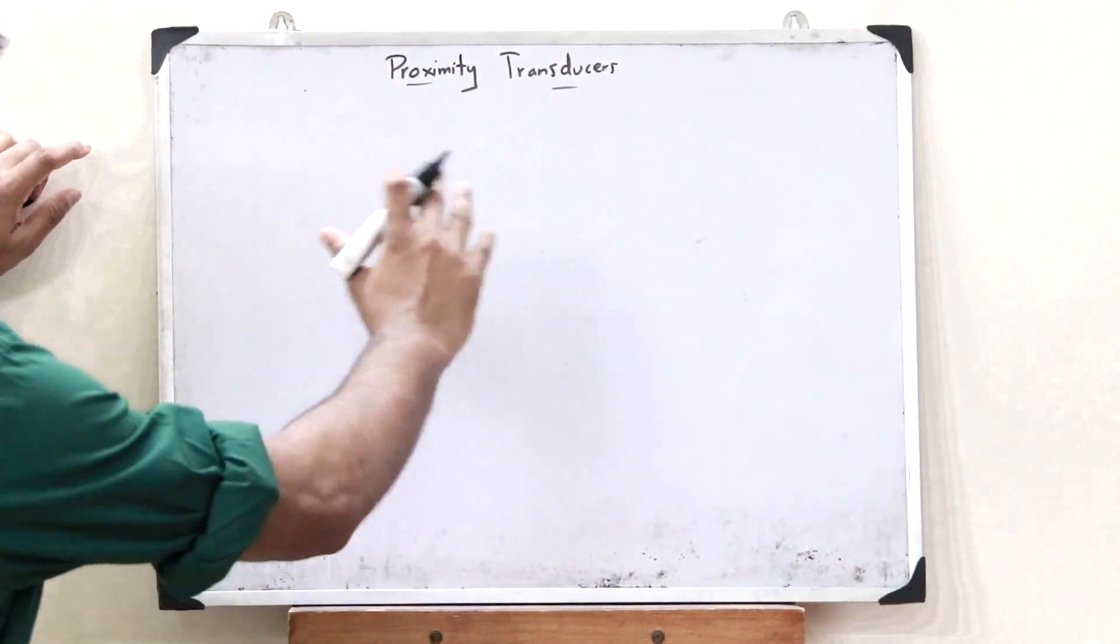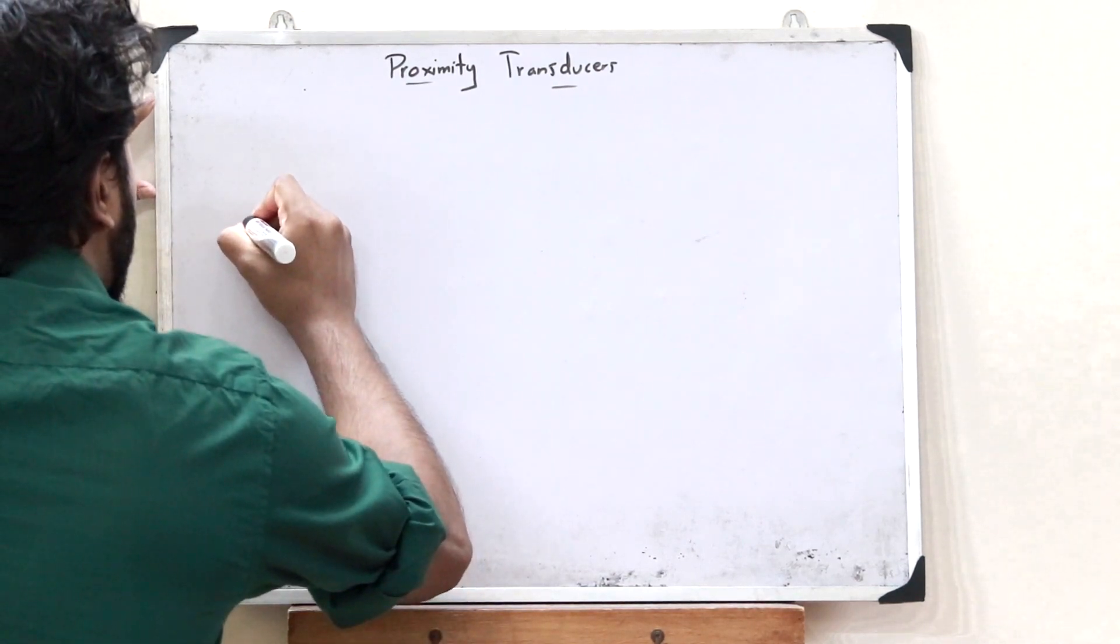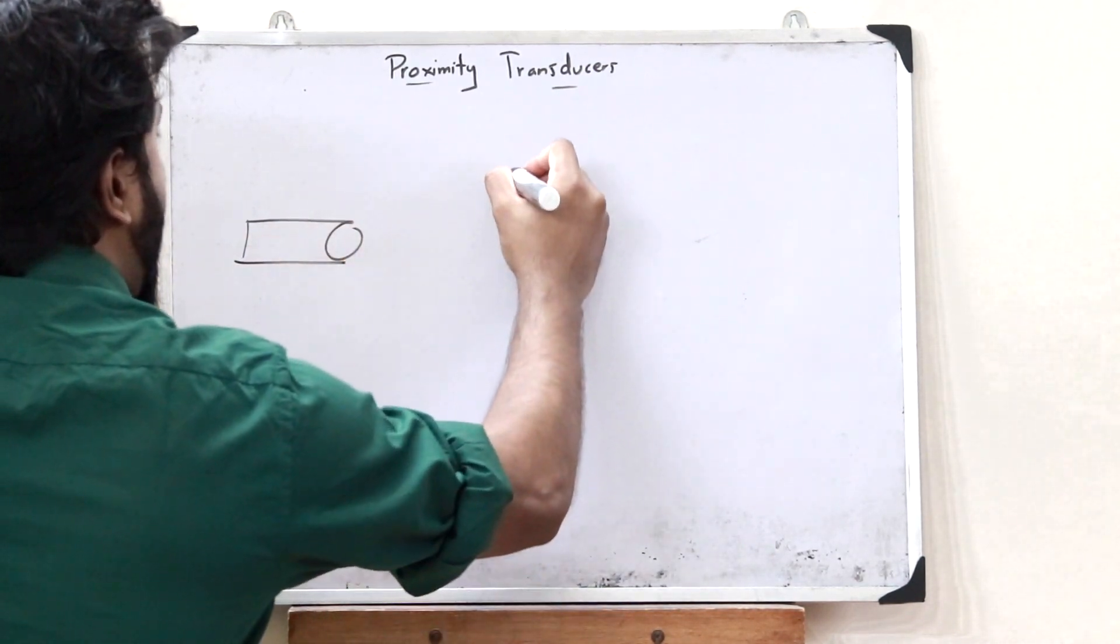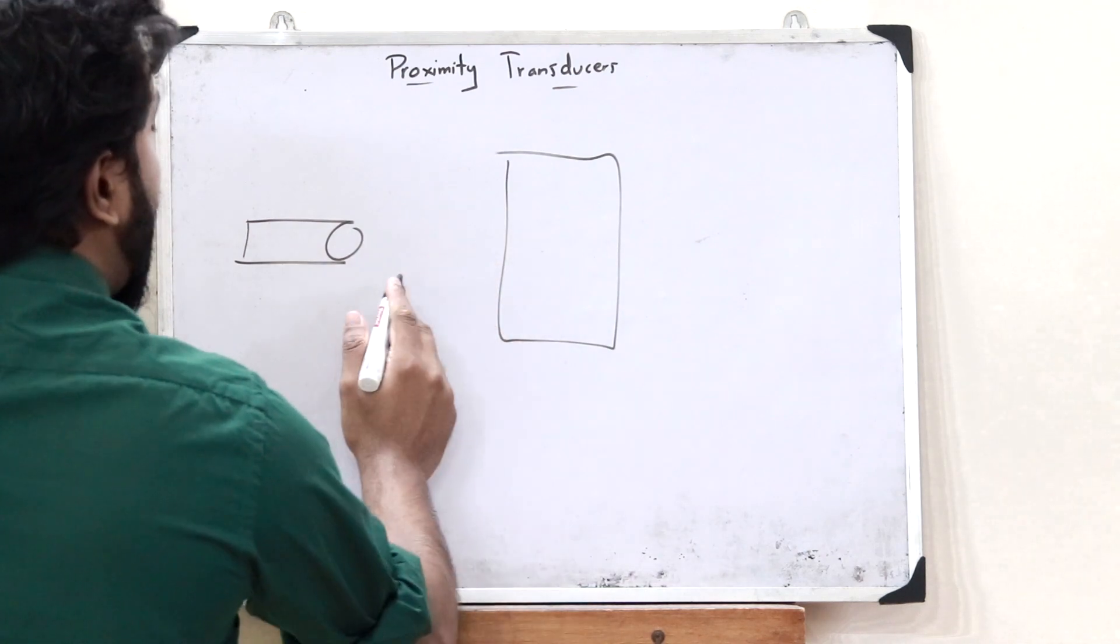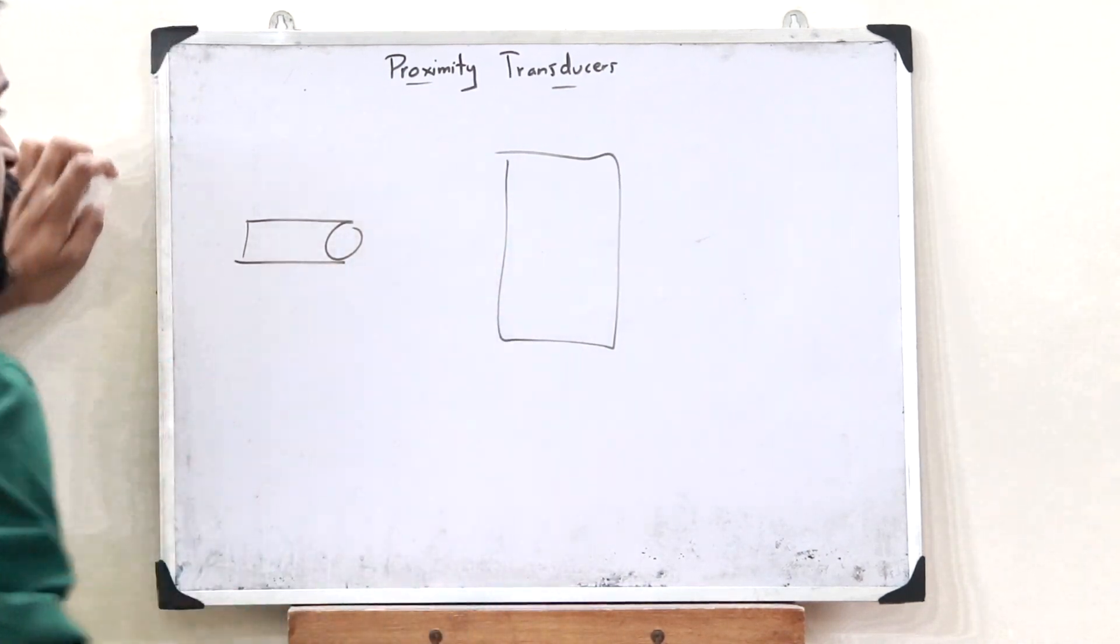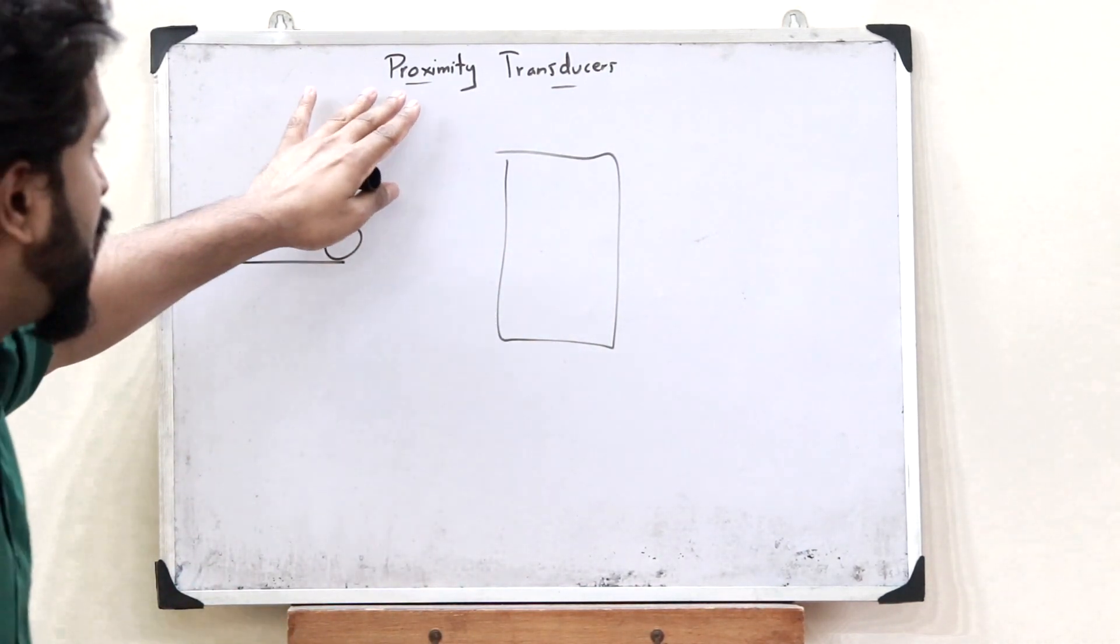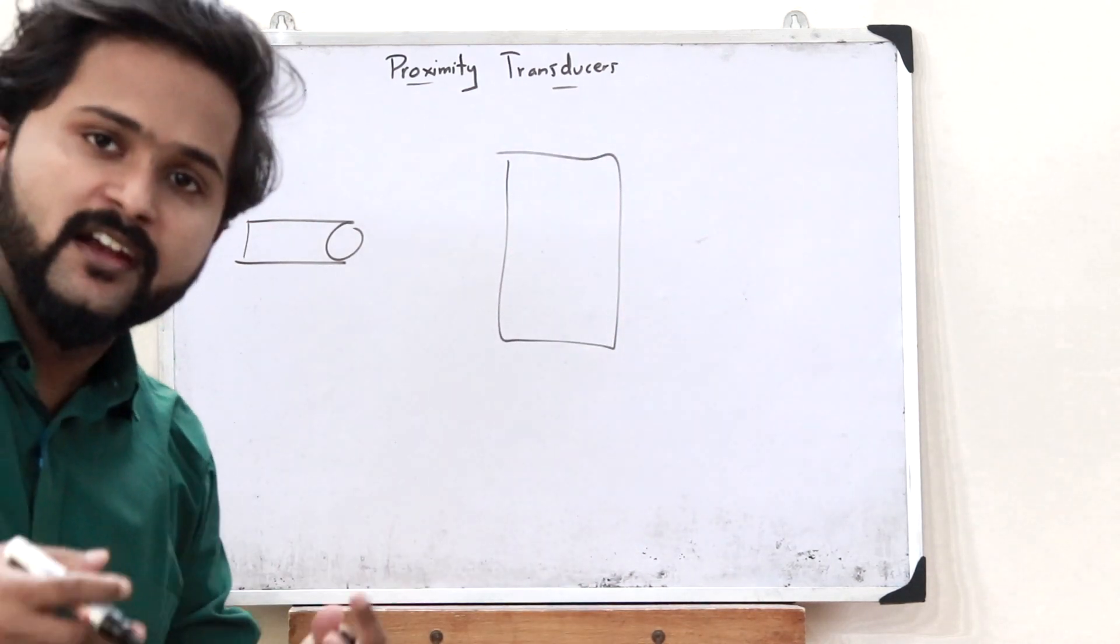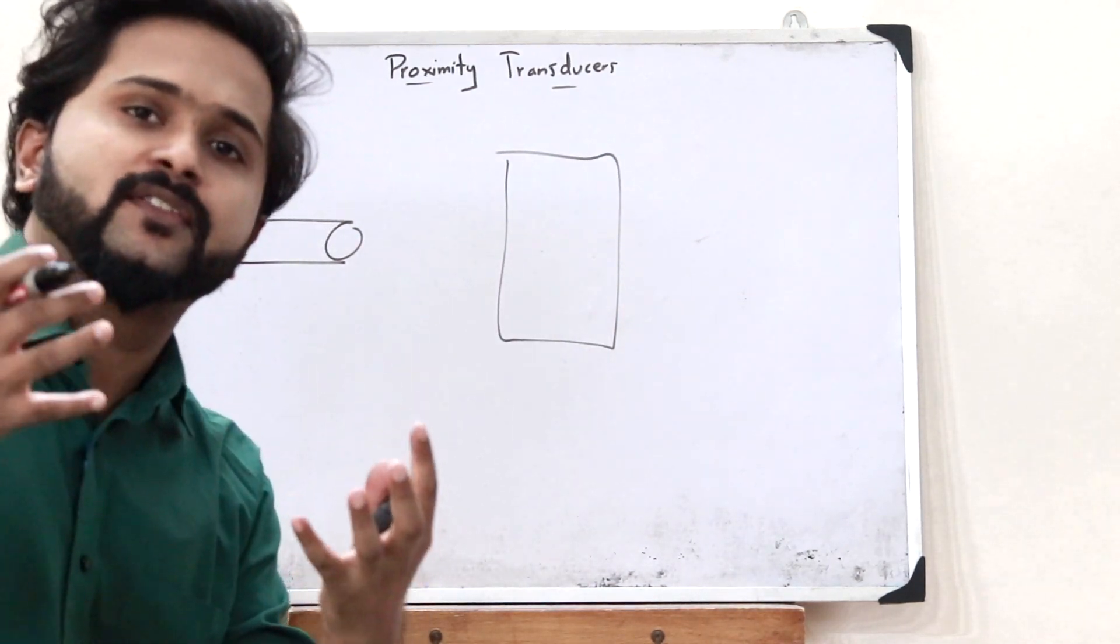A proximity transducer is basically a sensor that senses the presence of an object without coming in contact with this particular object. That is what you refer to as a proximity transducer. It is basically a proximity sensor.